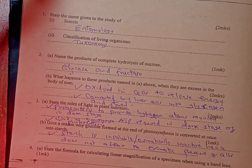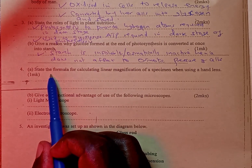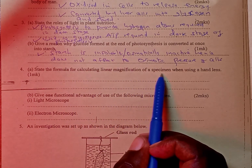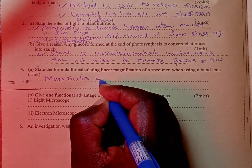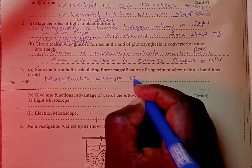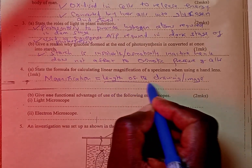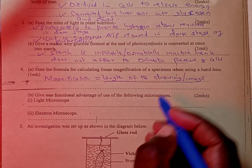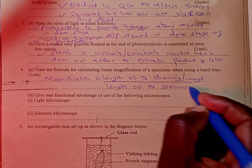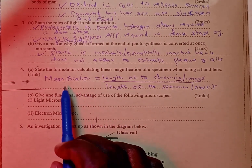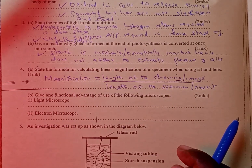We move to question number 4: state the formula for calculating linear magnification for a specimen when using a hand lens. This is very simple. Magnification is given by the length of the drawing, also known as the image, divided by the length of the specimen or object. Remember, you can only score if you write magnification in full and not as 'mg'.